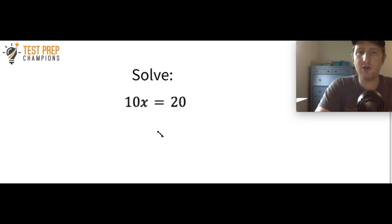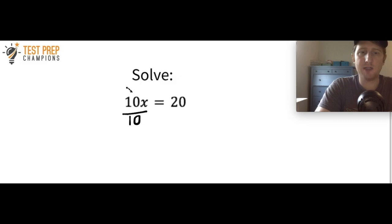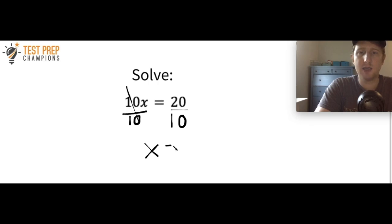In case you don't know how to solve an equation like that, that's okay. You have 10x and you want to get x by itself, so divide by 10. The reason is the 10s cancel out, and whatever you do to one side you must do to the other. Dividing both sides by 10 gives you x equals 2.